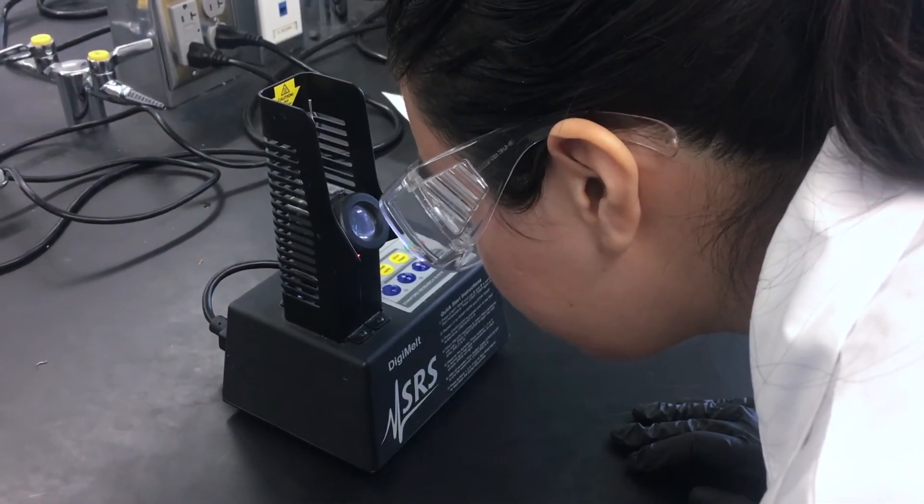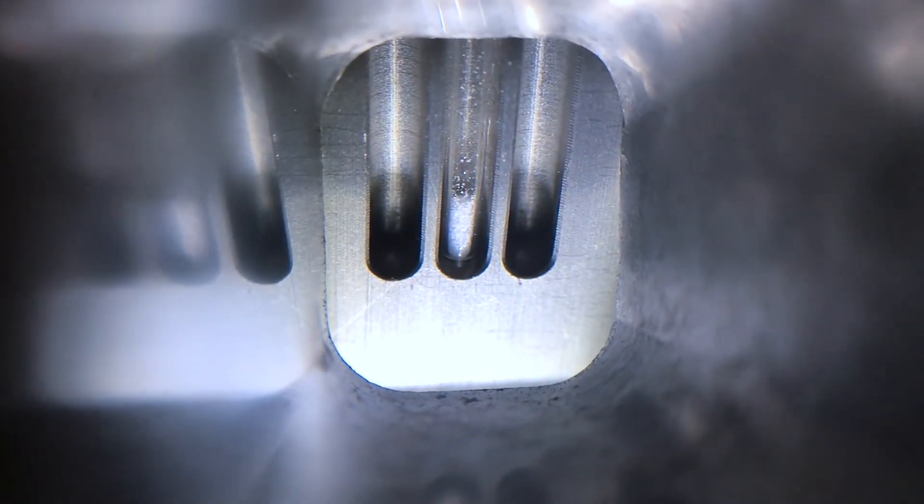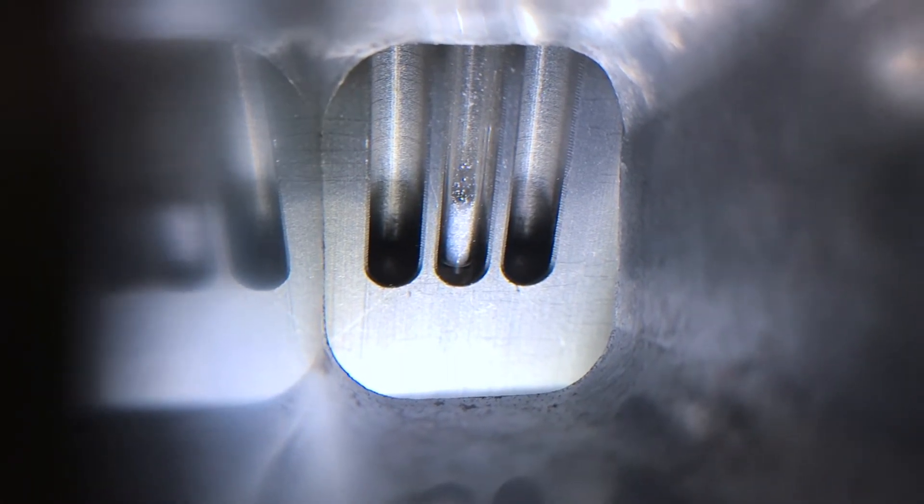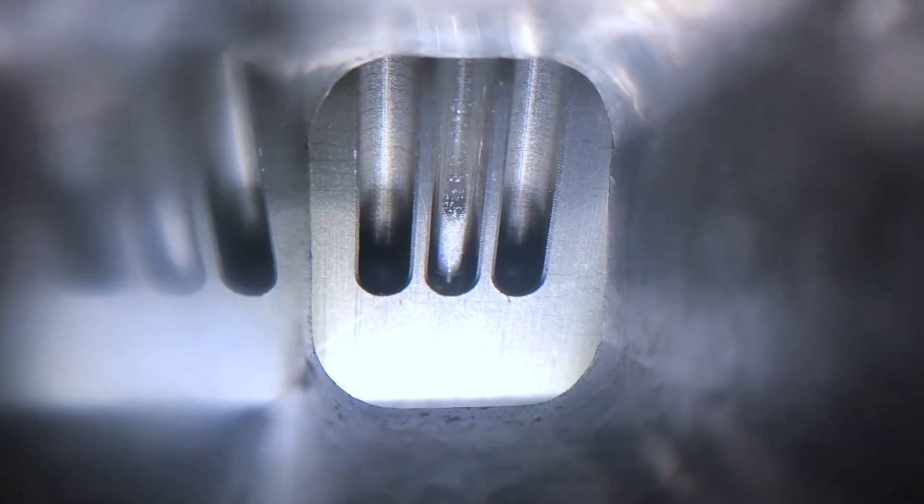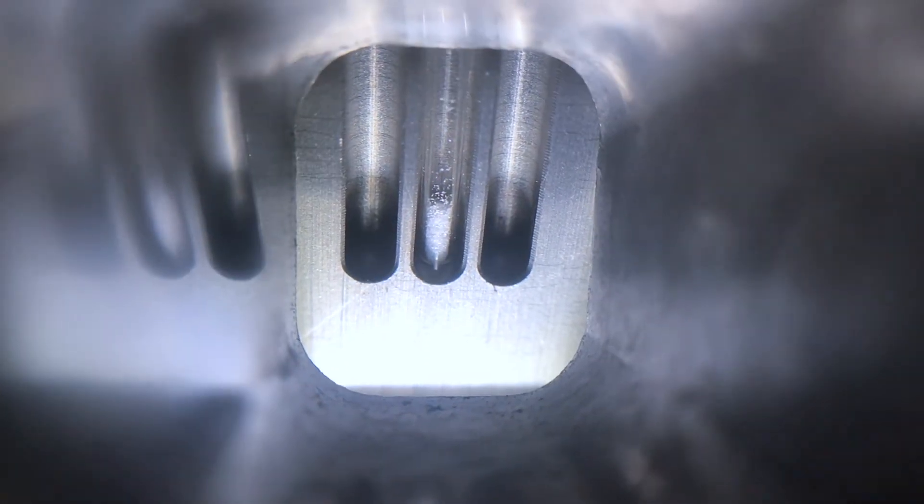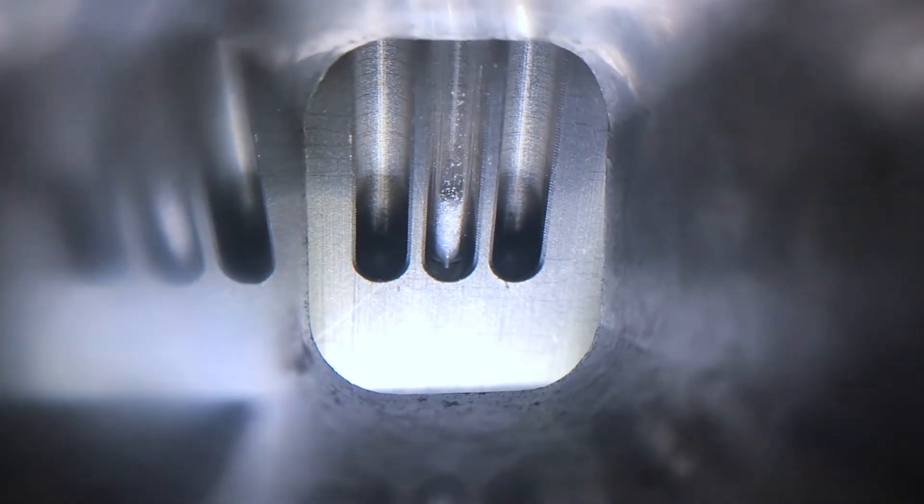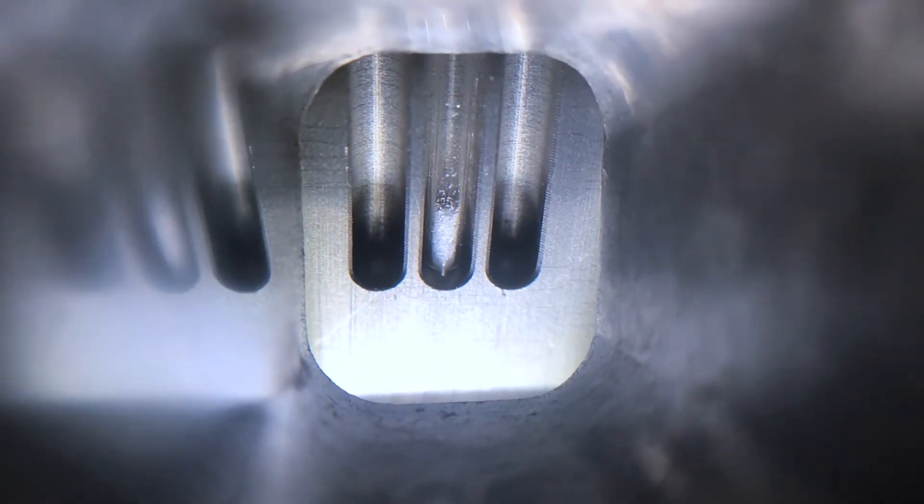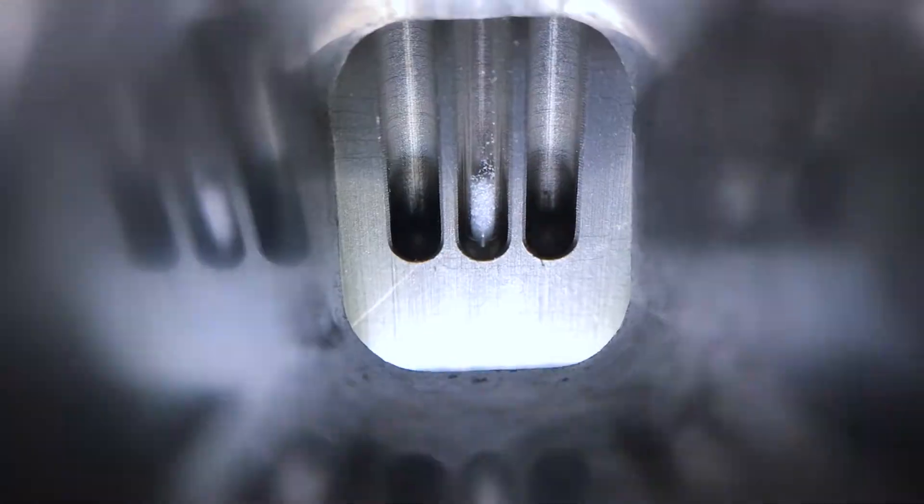Observe the melting process. You should report the experimental melting point as a range. The lowest number in the range is the temperature when the compound just starts to liquefy. The highest number is the temperature when the compound is completely melted.